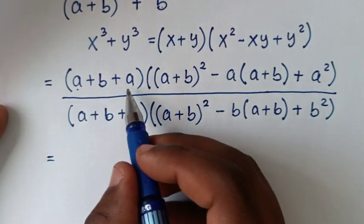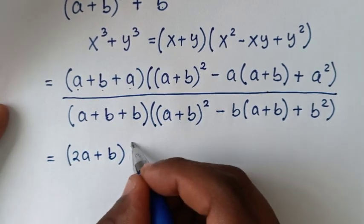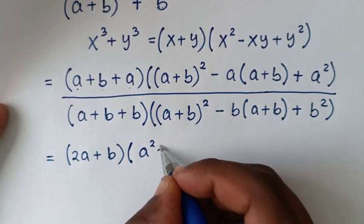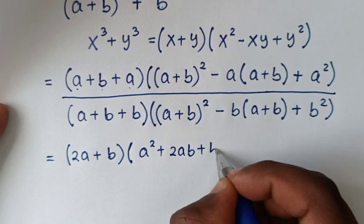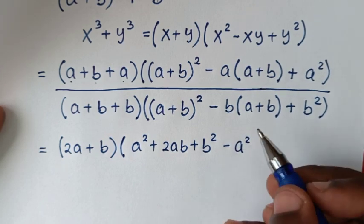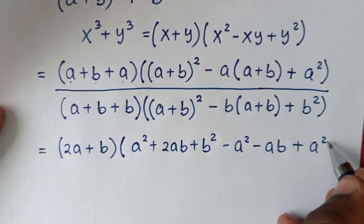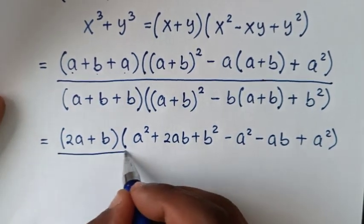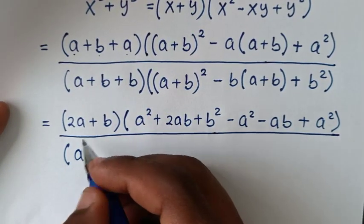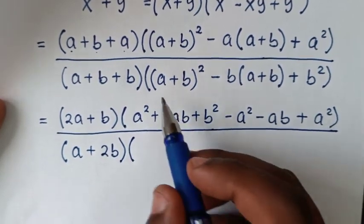In the next step, a plus a is 2a, so the numerator's first factor becomes (2a plus b). Expanding (a plus b) squared gives a squared plus 2ab plus b squared, then minus ab, plus a squared. In the denominator, b plus b is 2b, so the first factor is (a plus 2b), with the expansion following similarly.